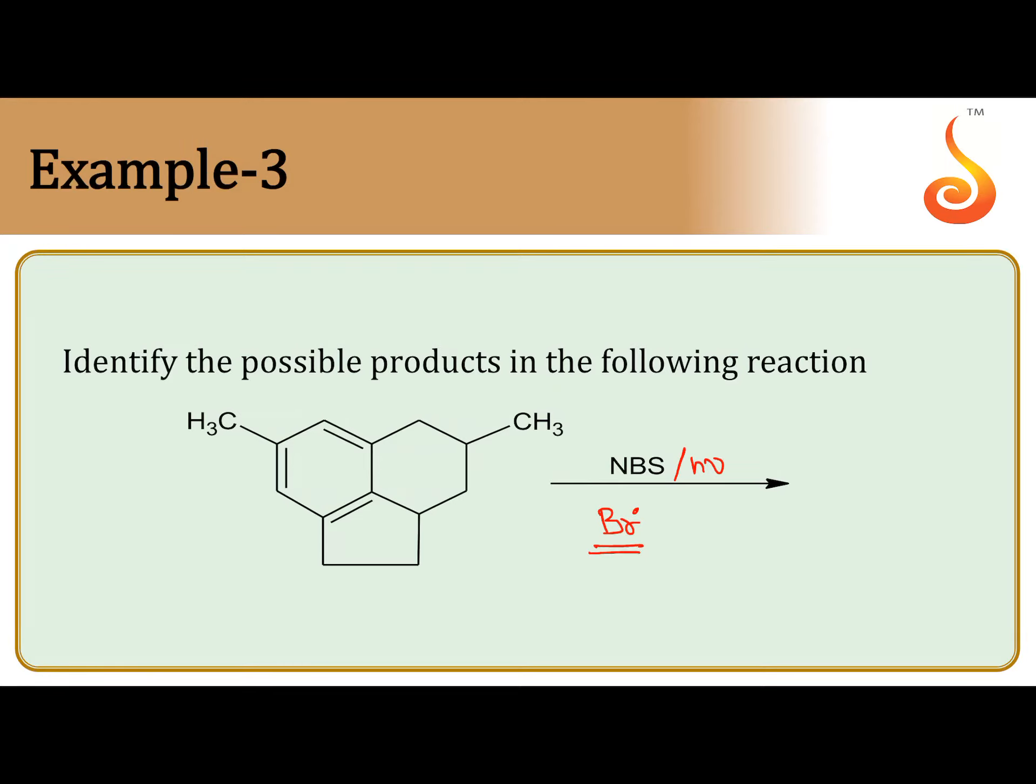That bromine free radical abstracts hydrogen from carbon which will give stable free radical. So bromine free radical prefers to abstract hydrogen from alpha carbon, alpha carbon with respect to doubly bonded carbon. So that is called allylic carbon, allylic carbon is also called alpha carbon with respect to doubly bonded carbon.